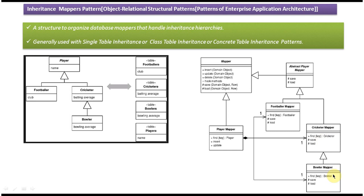Similarly, each mapper gets values from its corresponding domain object and saves them in its table, and retrieves values from the table to populate the domain object. For this hierarchy, the mappers are structured like this. Using these mappers we can perform CRUD operations — create, update, retrieve, and delete — in the corresponding database tables. That is the inheritance mapper pattern. Thanks for watching, bye.